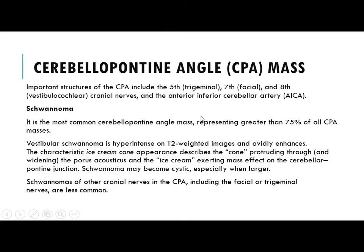Now we are talking about cerebellopontine angle masses. The important structures in the cerebellopontine angle are the 5th cranial nerve (trigeminal), 7th (facial), and 8th (vestibulocochlear) nerves, as well as the anterior inferior cerebellar artery.